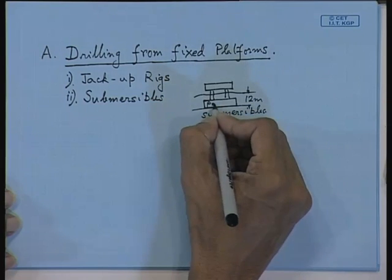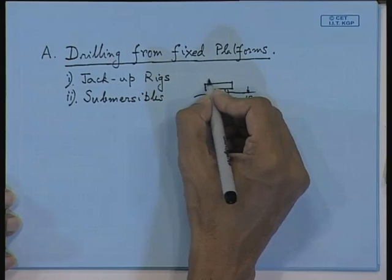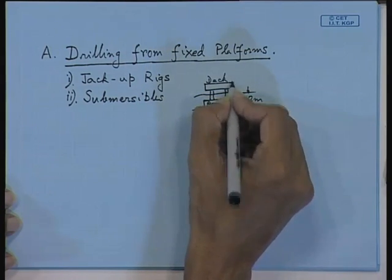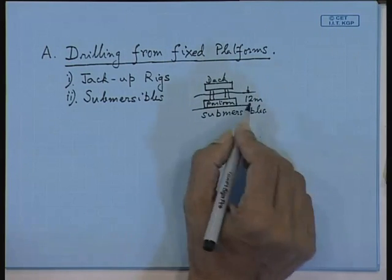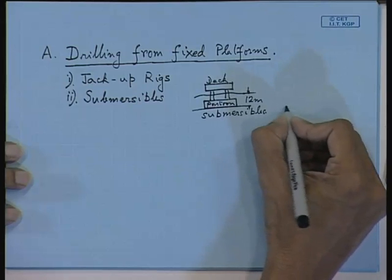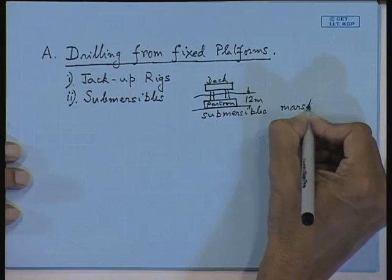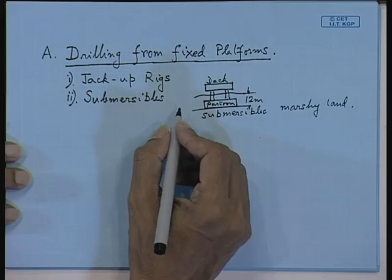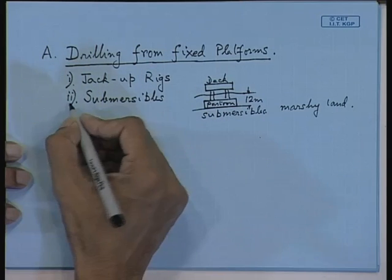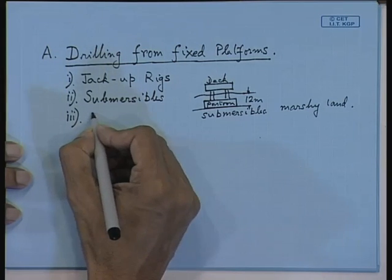The submersible has a pontoon and deck. These are of not much use nowadays, though in marshy areas you can still find these types of structures. These are called submersibles. The last category I have talked about is jacket platforms, which are called jackets.